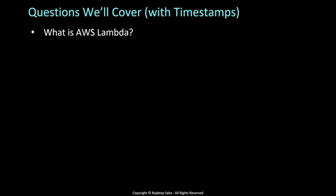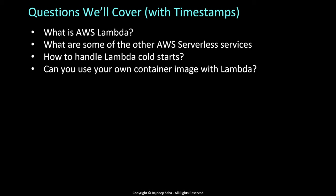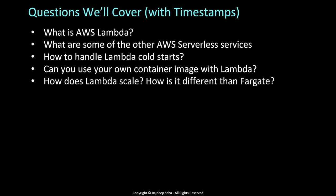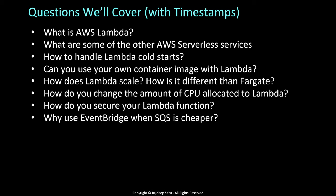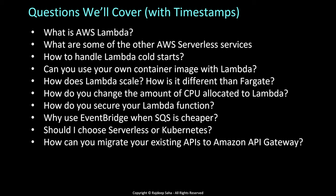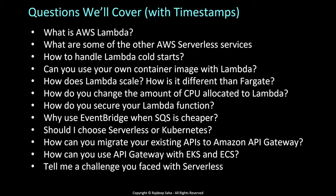The questions we're going to cover are: What is AWS Lambda? What are some of the other AWS serverless services? How to handle Lambda cold starts? Can you use your own container image with Lambda? How does Lambda scale and how is it different than Fargate? How do you change the amount of CPU allocated to Lambda? How do you secure your Lambda function? Why use EventBridge when SQS is cheaper? Should I use serverless or Kubernetes? How can you migrate your existing APIs to Amazon API Gateway? How can you use API Gateway with EKS and ECS? And tell me a challenge you faced with serverless. This is a packed video, so I've provided timestamps for your viewing convenience.